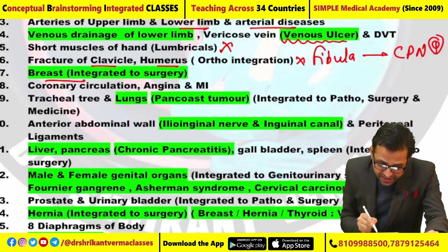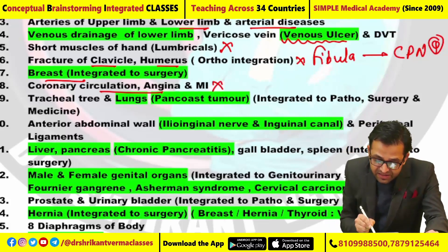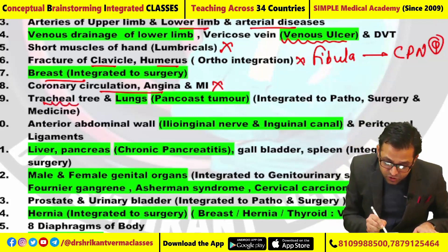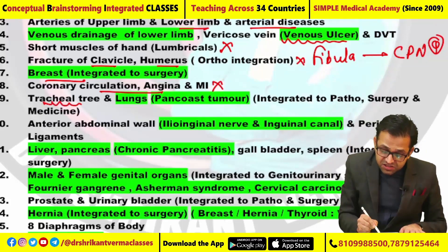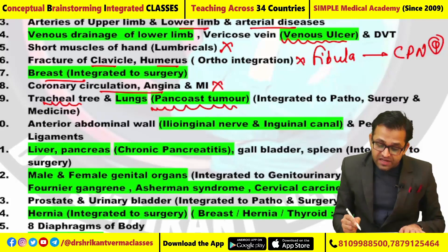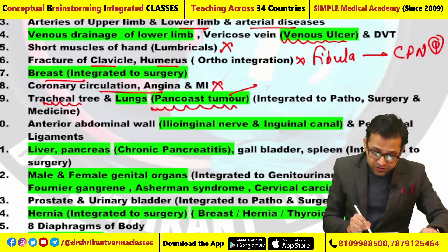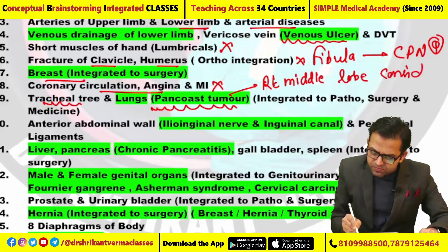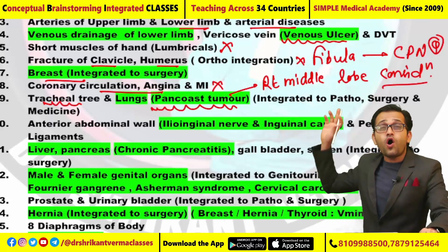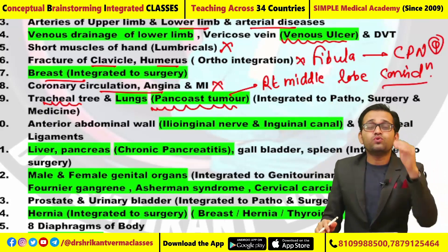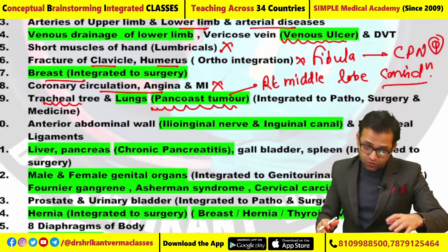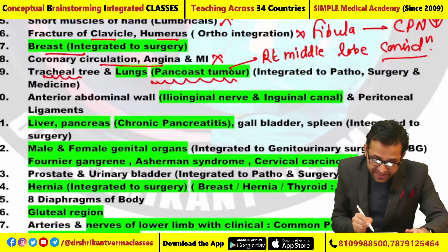Coronary circulation and enzymes in MI — direct question from anatomy had not been asked. For the tracheal tree, tracheostomy question had been asked, and this time lung Pancoast tumor as well as one question for right middle lobe consolidation — such questions on the basis of X-ray were asked. So you can say it was integrated with anatomy, radiology, and medicine.